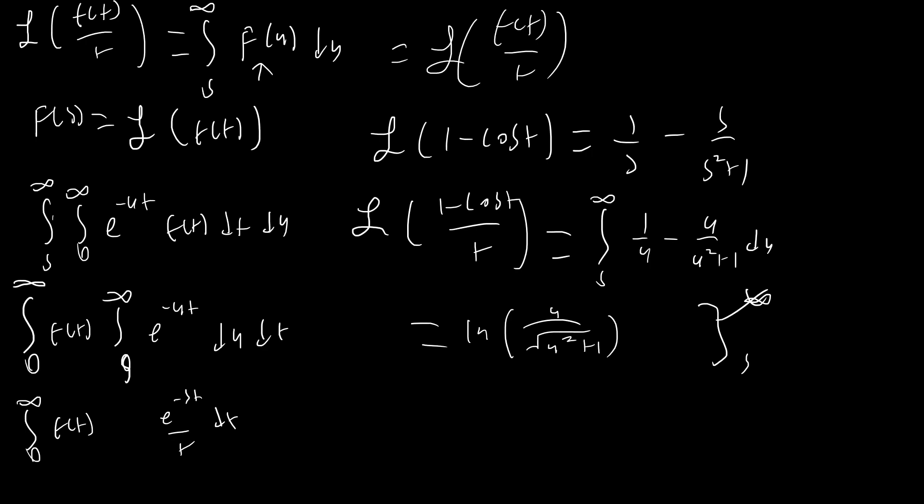At s, it's just going to be negative ln(s / √(s² + 1)), so we flip it. If you plug in s = 0, it's not going to work, because the integral from zero to infinity of (1 - cos t)/t actually diverges — (1 - cos t) oscillates around one-half and doesn't go low enough for that integral to converge. But we can still use this Laplace transform and apply our trick again to get the Laplace transform of (1 - cos t)/t².